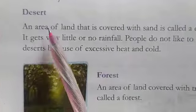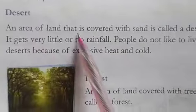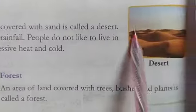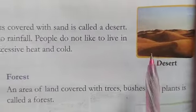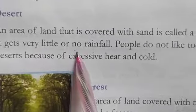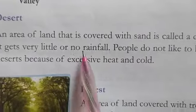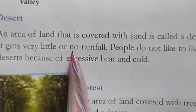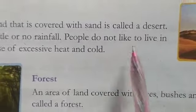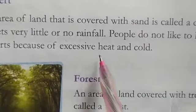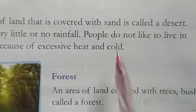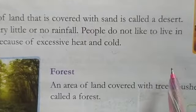Next is desert. An area of land that is covered with sand is called a desert. There will be very little rainfall. People do not like to live in deserts. It will be very hot, and in some cold deserts, it will be cold.